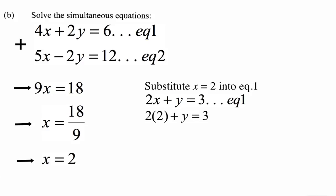So 2 times 2 plus y equals 3. That means 4 plus y equals 3. y is therefore 3 minus 4, and y should equal minus 1.